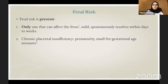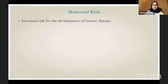Fetal risk is present with pemphigoid gestationis — it is the only pregnancy dermatosis that can directly affect the fetus. About 10% of newborns can have lesions at birth, usually mild and spontaneously resolving within days to weeks, due to passive transfer of maternal antibodies. Other fetal risks include chronic placental insufficiency, prematurity, and small for gestational age neonates. Maternal risk: there is no direct maternal risk, but patients have a slightly increased risk of developing Graves' disease.